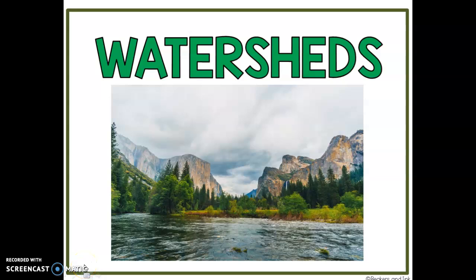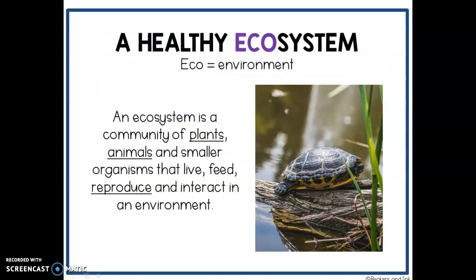Today we're going to talk about watersheds and we're going to start off by talking about the ecosystem in our watershed. A healthy ecosystem is very important. Eco means environment, so we're talking about having a healthy environment in order for things to be able to thrive. We would define an ecosystem as the community of plants, animals, and smaller organisms that live and feed and reproduce and interact in an environment. An ecosystem can be as large as the Sahara Desert or it can be as small as the puddle in your backyard.